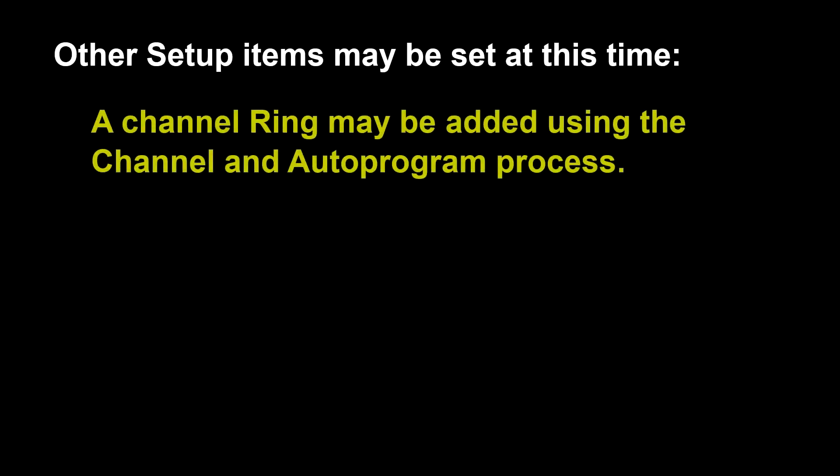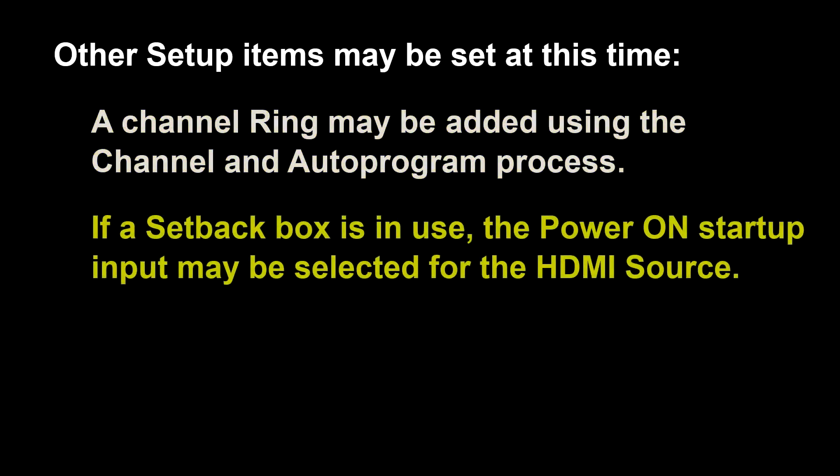Depending on the local installation, other setup items may be changed at this time. For example, if the TV will be using its tuner to get channels, a channel scan may be acquired using the channel option and then selecting the autoprogram option. If a set-top box will be used, the startup source, such as HDMI 1, may be selected on the power on section of the factory menu.